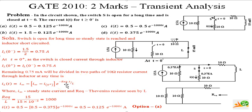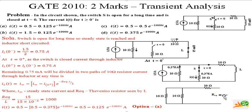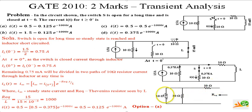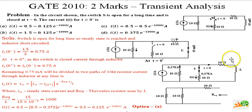For the equivalent resistance seen by the inductor, we have 10 ohms, 10 ohms, and 10 ohms in parallel. Ten ohms in parallel with 10 ohms gives 5 ohms, and adding the remaining 10 ohms gives an equivalent resistance of 15 ohms. With L equal to 15 millihenrys, the time constant tau equals L over R_eq equals 15 millihenrys divided by 15 ohms, giving 1 millisecond.